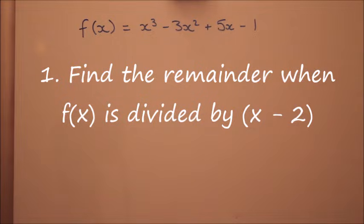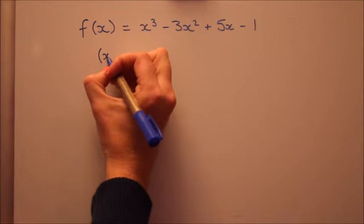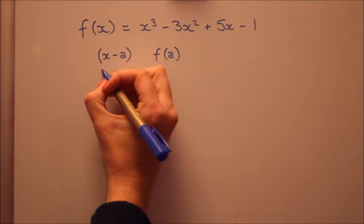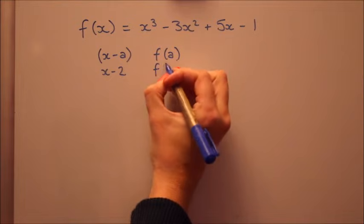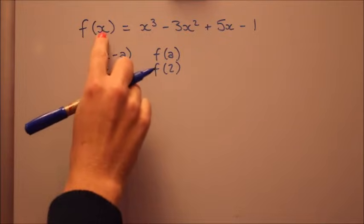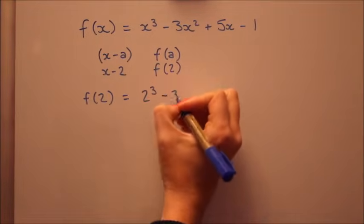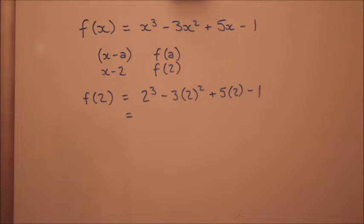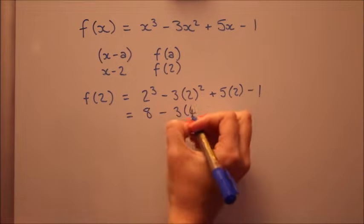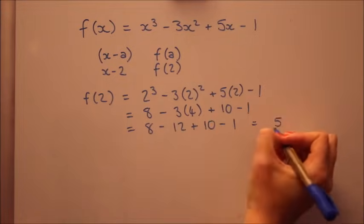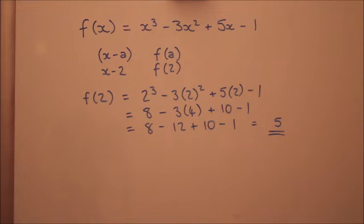Using the remainder theorem we can do this very quickly. When you divide by x minus a, the remainder is given by f of a. So in this case we're dividing by x minus 2, a then is clearly 2. So to find f of 2 we're actually plugging 2 in as x. Now you're not given a calculator in core 1 so you will have to do some arithmetic here. And that's the answer, the remainder is 5. So it's actually really easy once you know what you're doing. Let's have a look at another question.